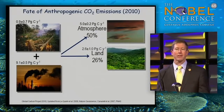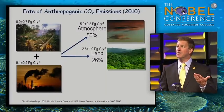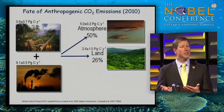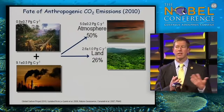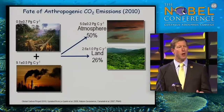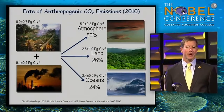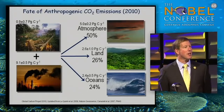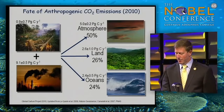Our estimates are that approximately half of that remaining carbon is going into the terrestrial biosphere. Plants breathe in CO2 and release oxygen, and many plants, particularly trees, grow faster in higher CO2 environments. That fertilization, together with reforestation, is helping to absorb CO2. But the other half is going into the oceans. As an oceanographer, I'll focus on why the oceans are taking up CO2, where it's going, and what impact it will have on our global oceans and marine ecosystems.